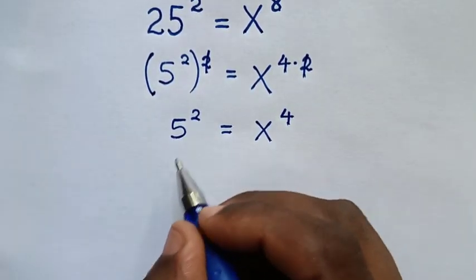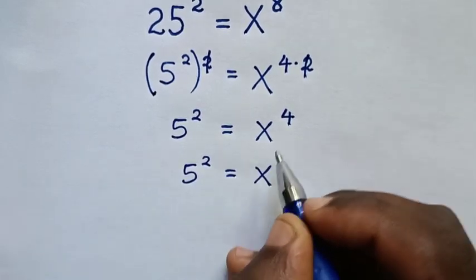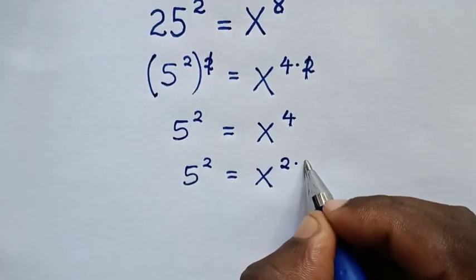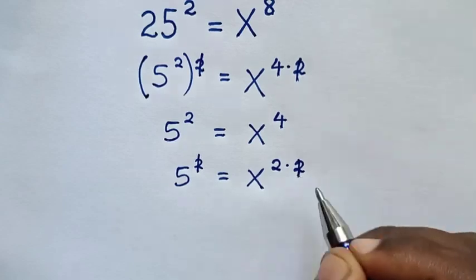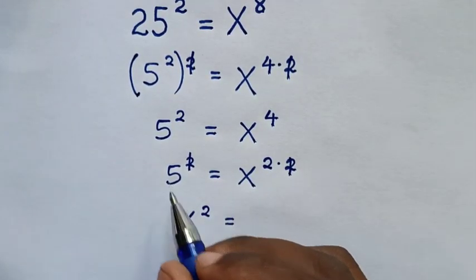Then in the next step, it will be 5² = x⁴. 4 can be written as 2 times 2. Then to simplify, this power of 2 will cancel with this power of 2. So it will be x² = 5.